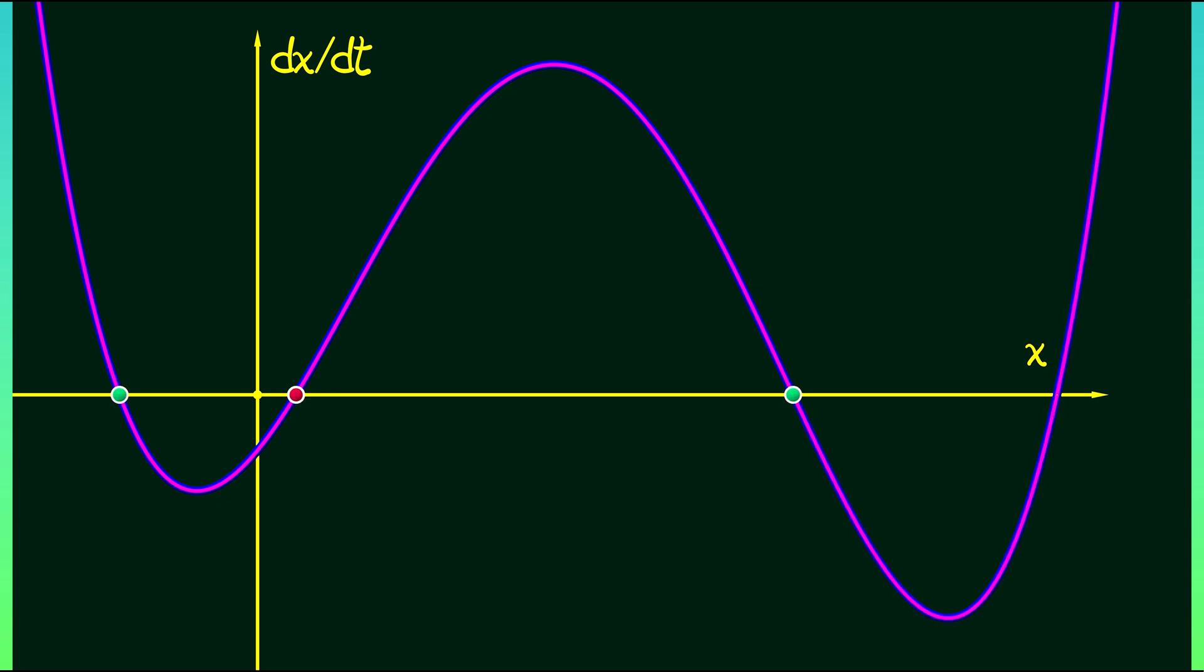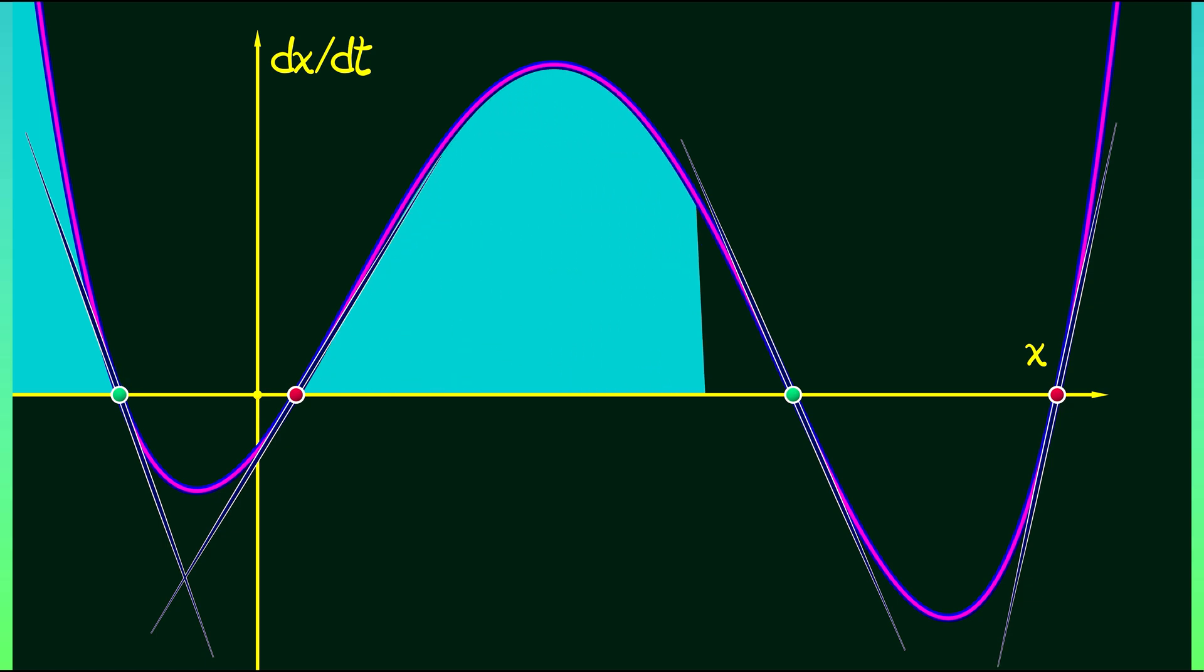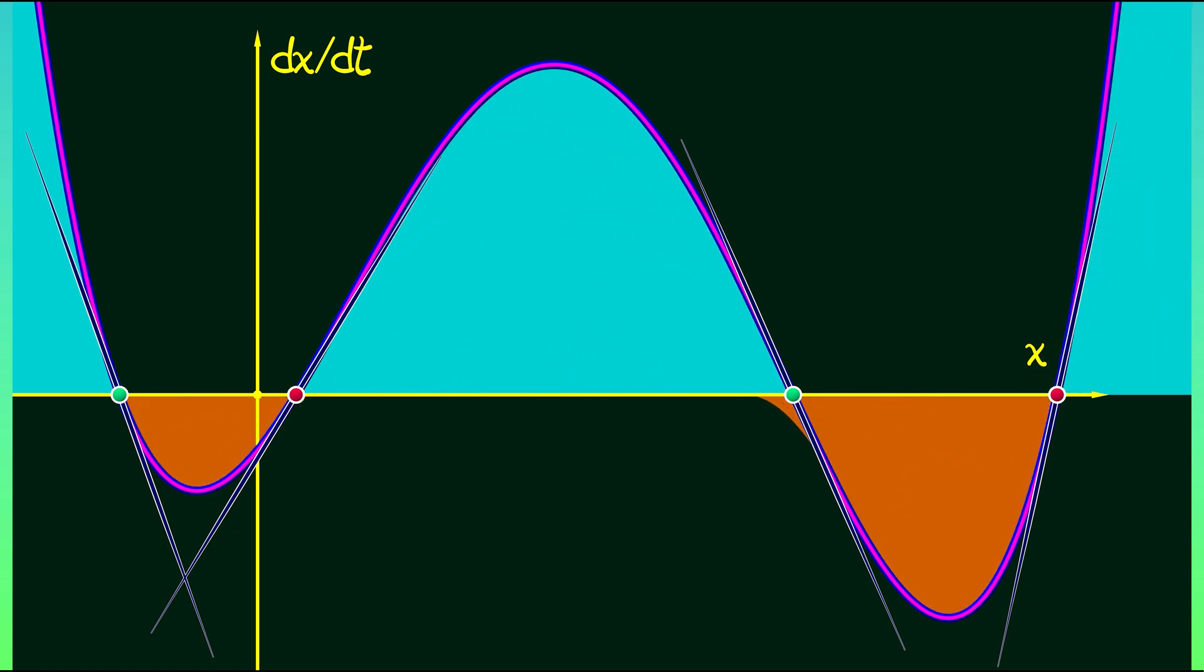We can see exactly where the equilibria are. And then we can see the stability by means of the derivative, by means of the slope of the tangent line of f at the equilibria.